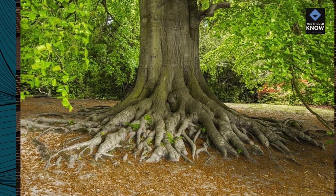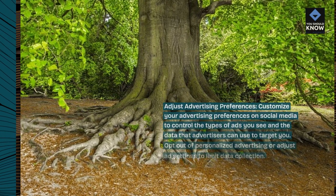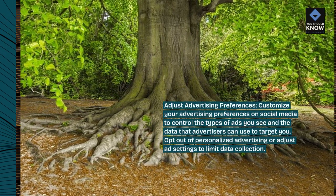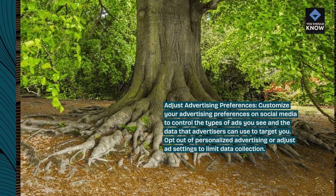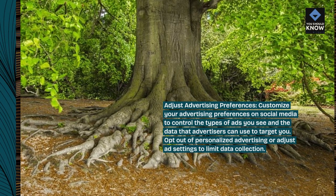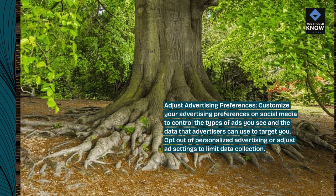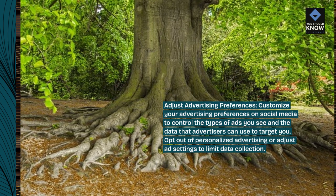Tip 8: Adjust advertising preferences. Customize your advertising preferences on social media to control the types of ads you see and the data that advertisers can use to target you. Opt out of personalized advertising or adjust ad settings to limit data collection.